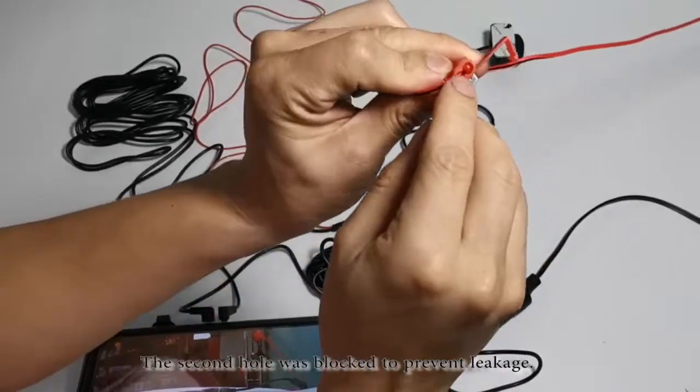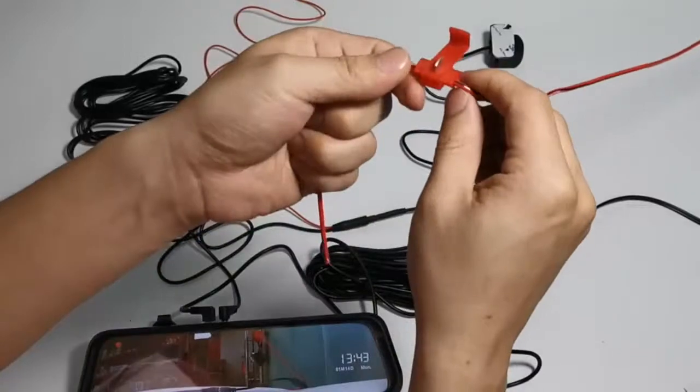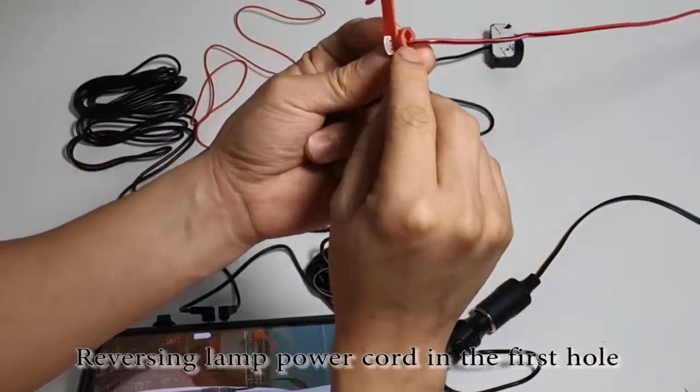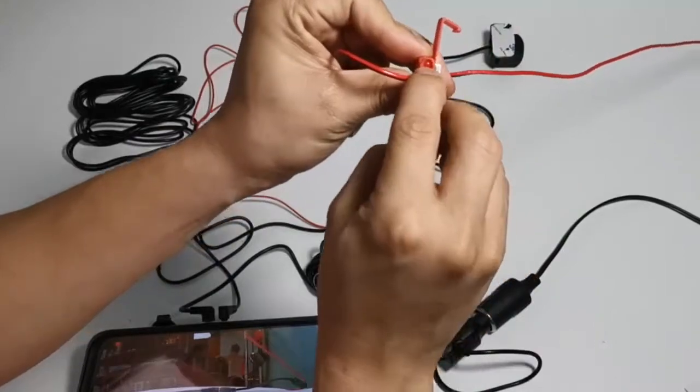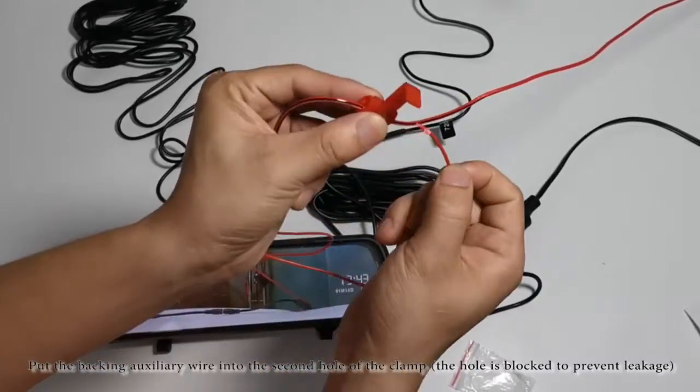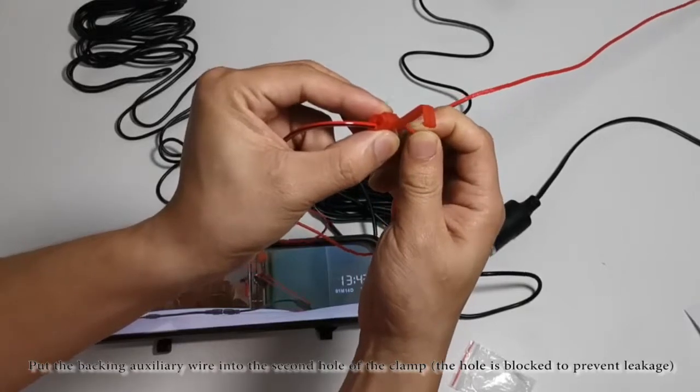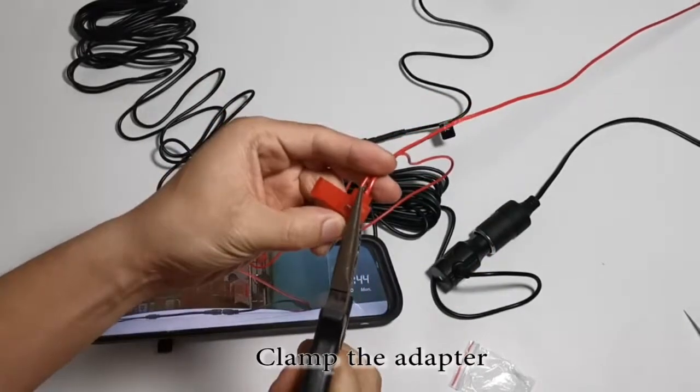The second hole was blocked to prevent leakage. Reversing lamp power cord in the first hole. Put the backing auxiliary wire into the second hole of the clamp. The hole is blocked to prevent leakage. Clamp the adapter.